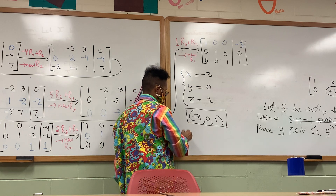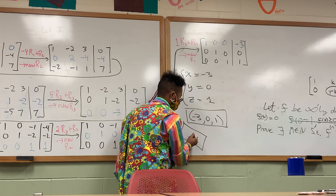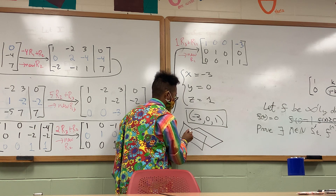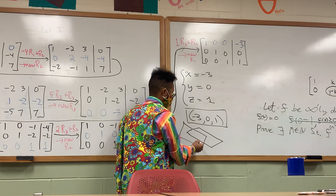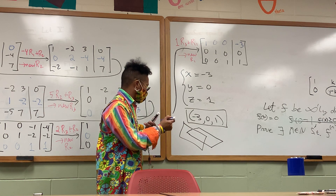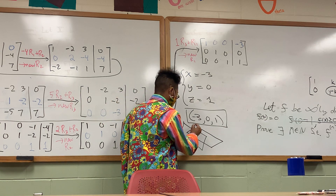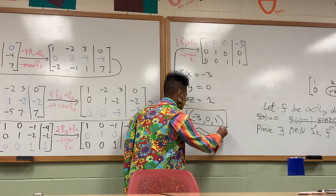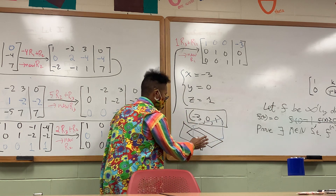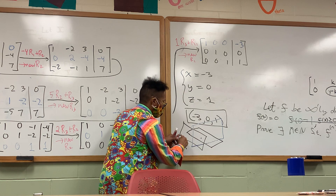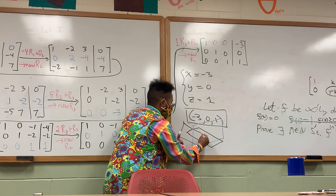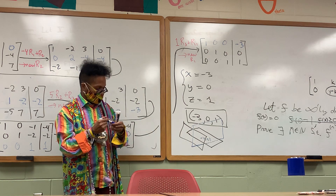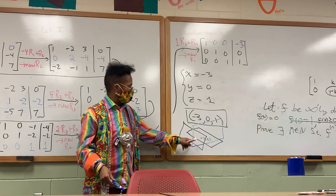Visually, what's happening? We have a plane, another plane, and then a third plane. Where all these things meet is one single point that's on this plane, on this plane, and on this plane. And that point is negative three, zero, one. That's how you do these problems when they meet at a single point.